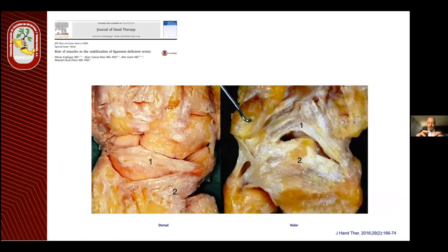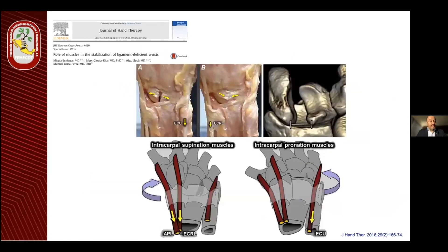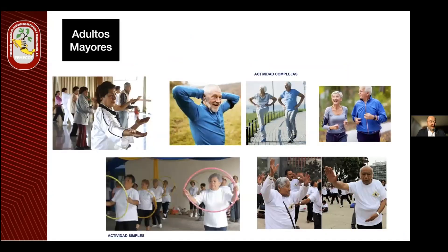Más allá de todo esto, conocer los ligamentos radiocarpales e intercarpales que nos favorecen la estabilidad. Existen también estabilizadores externos como son nuestros tendones. El paciente mueve inmediatamente la mano, puede generar el movimiento de flexión y extensión de los dedos, lo cual nos hablará de cómo va generándose la mejoría al paciente.